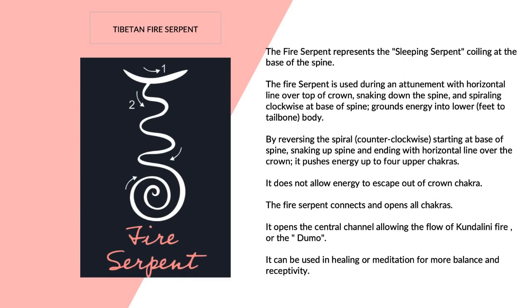Tibetan Fire Serpent. The fire serpent represents the sleeping serpent coiling at the base of the spine. The fire serpent is used during an attunement with a horizontal line over the top of the crown, snaking down the spine and spiraling clockwise at the base of the spine. It grounds energy into the lower body. By reversing the spiral counter-clockwise, starting at the base of the spine, snaking up the spine, and ending with a horizontal line over the crown, it pushes energy up to the four upper chakras. It does not allow energy to escape out of the crown chakra. The fire serpent connects and opens all chakras. It opens the central channel, allowing the flow of kundalini fire, or the Dumo.